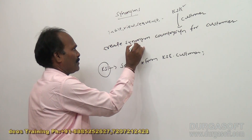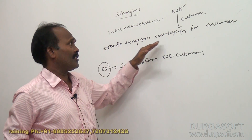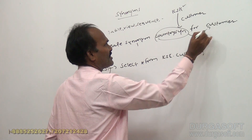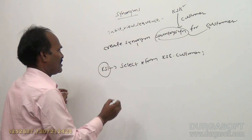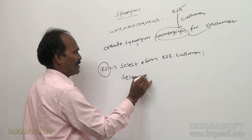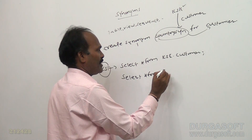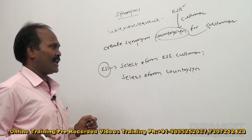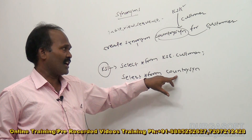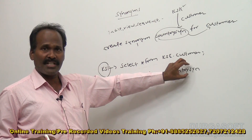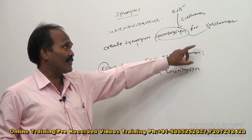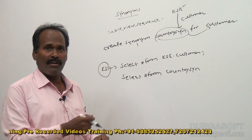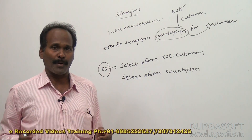In the previous example, I created one synonym called 'country_syn' for the customer table. Directly, by using country_syn, you can access the customer table. How to access? Just: SELECT * FROM country_syn. You need not use any schema name at all - directly you can access country_syn. This gives more protection because it is not a direct object - it is a synonym, an alternate name for customer. The actual rows and actual information are in the customer table. By using this alias name, we are trying to access the table. By using a synonym, we directly achieve some protection for security reasons.